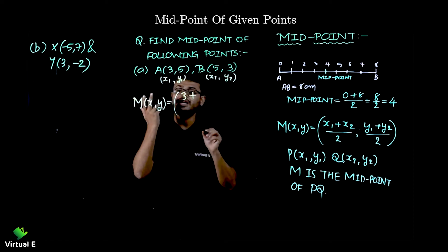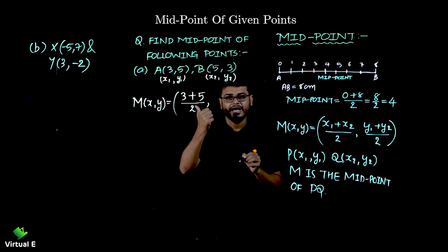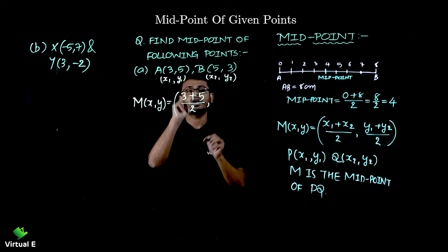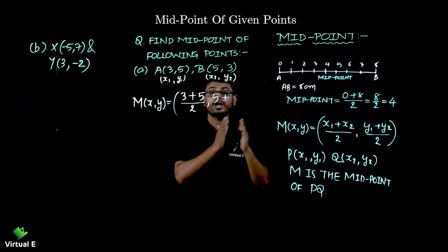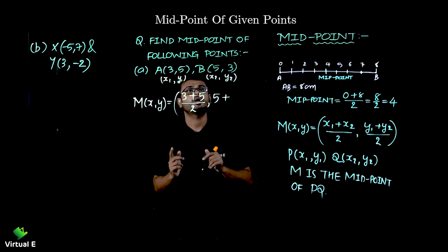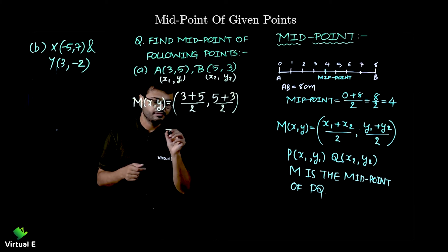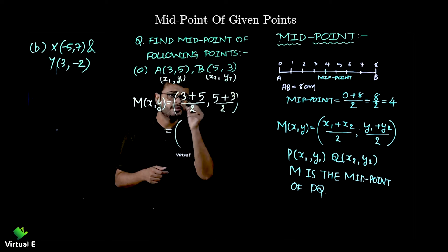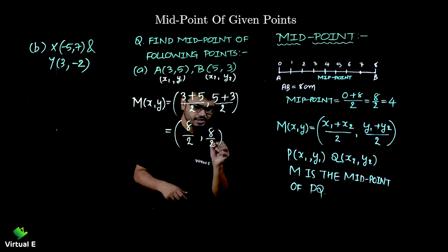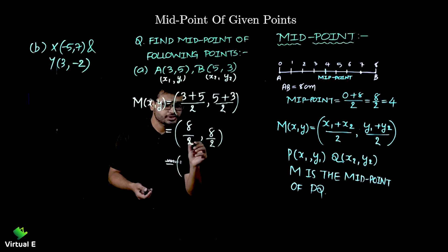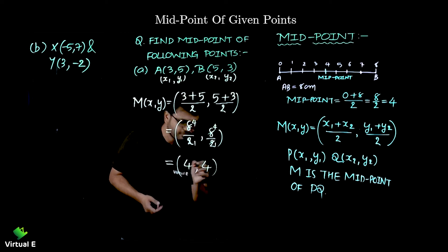For the x-coordinate: x1 plus x2 is 3 + 5, denominator 2. For the y-coordinate: y1 plus y2 is 5 + 3, denominator 2. Simplifying: 3 + 5 = 8, divided by 2; and 5 + 3 = 8, divided by 2. Cancelling 2 gives 4 in both cases. So the midpoint is (4, 4).